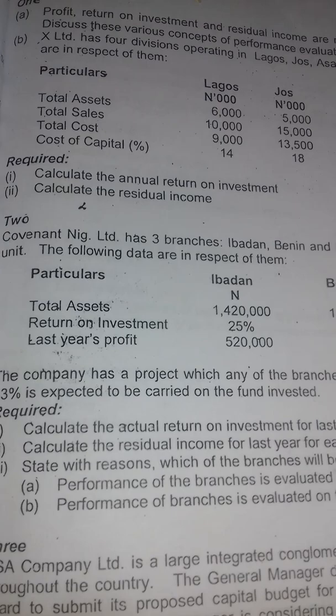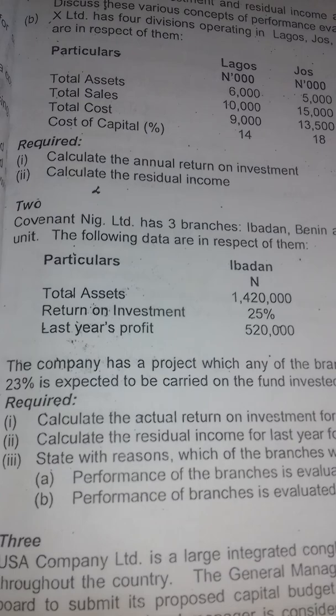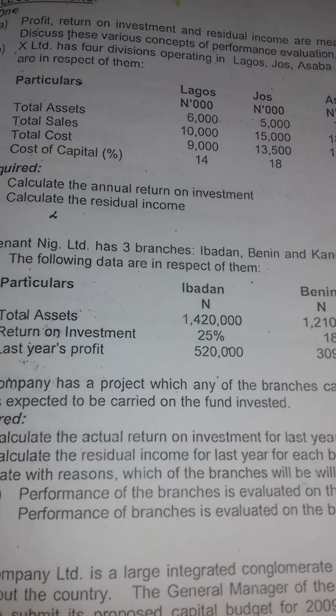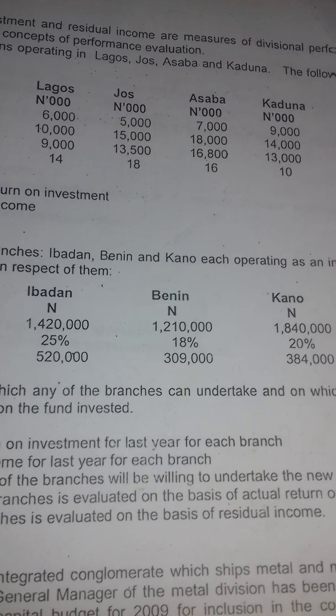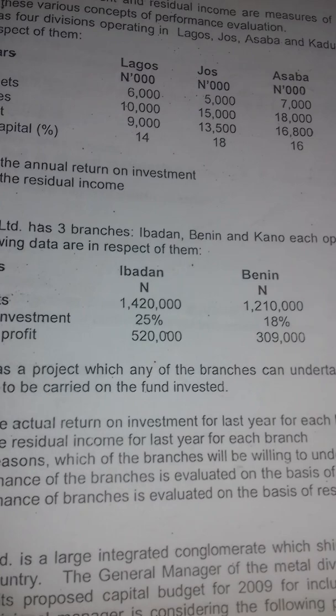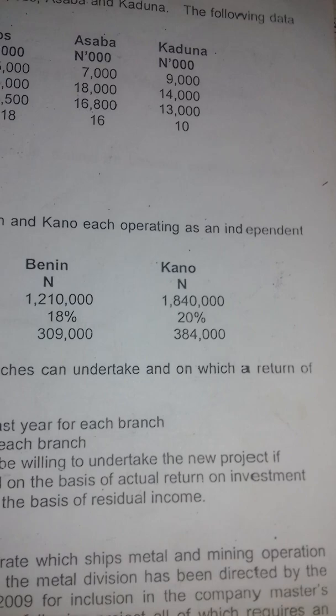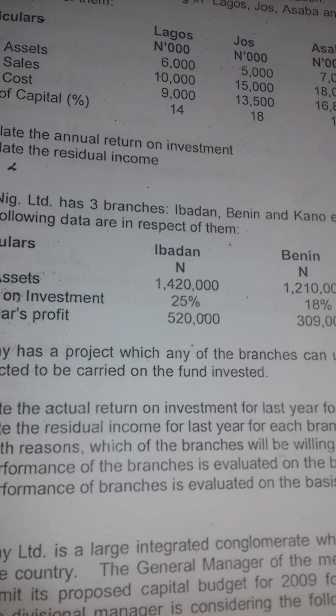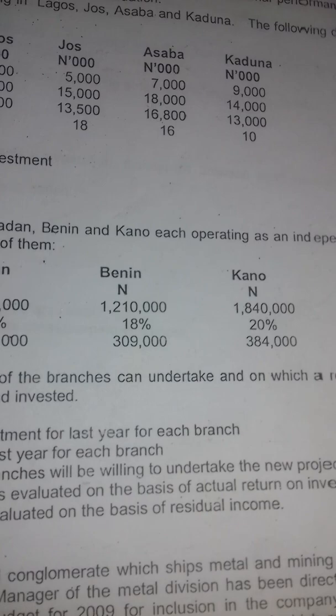We have total assets, return on investment, and last year's profit. Ibadan had $1,420,000 as total assets; Benin $1,210,000; Kano $1,840,000. Return on investment: Ibadan 25%, Benin 18%, and Kano 20%. Last year's profit: Ibadan $520,000, Benin $209,000, Kano $384,000.